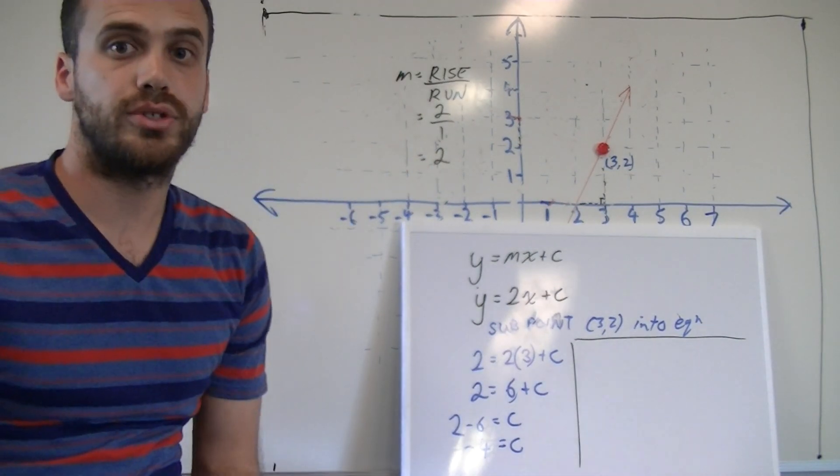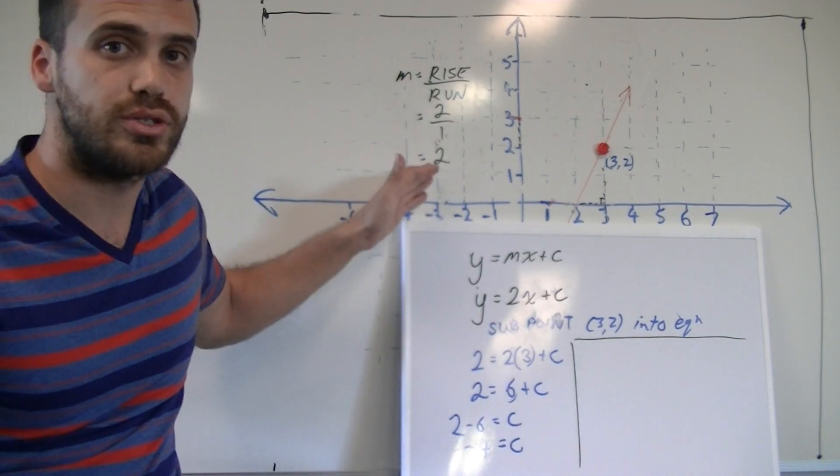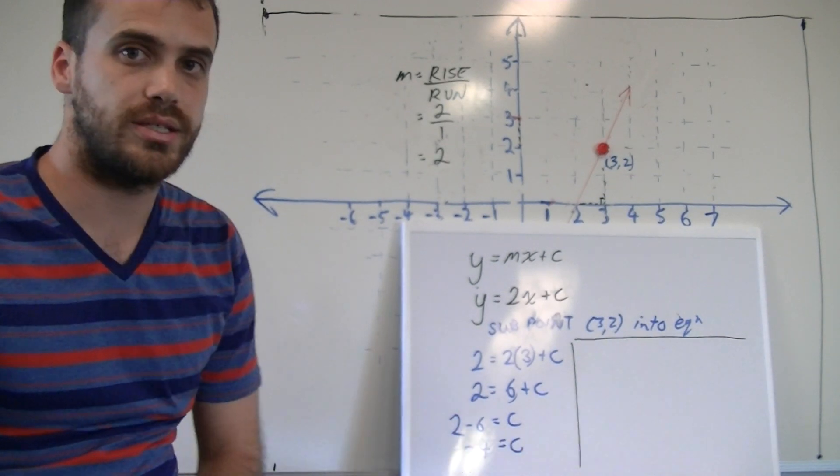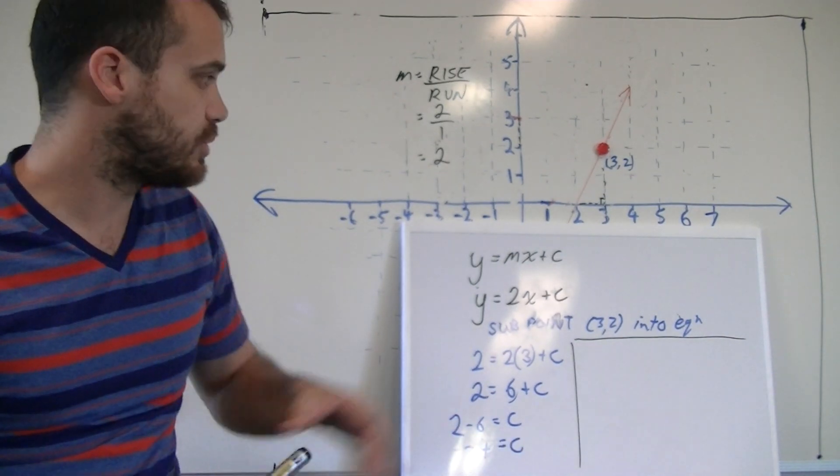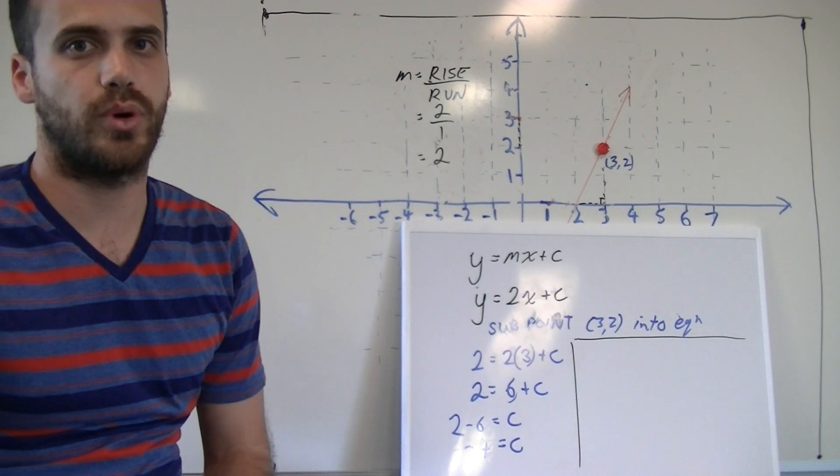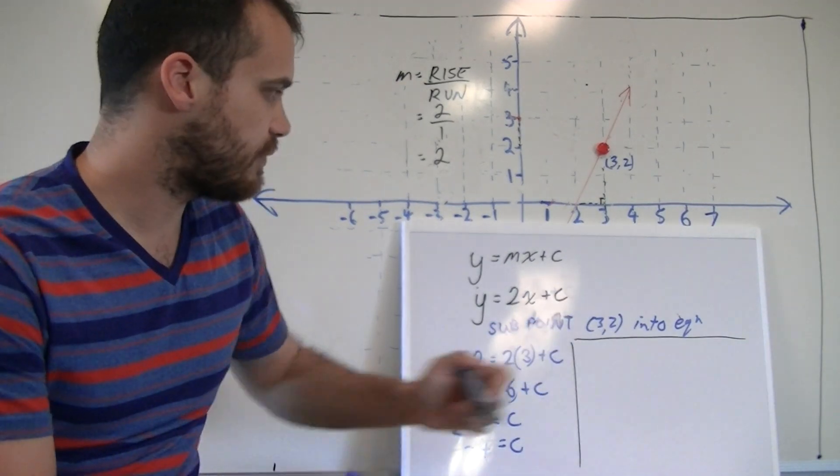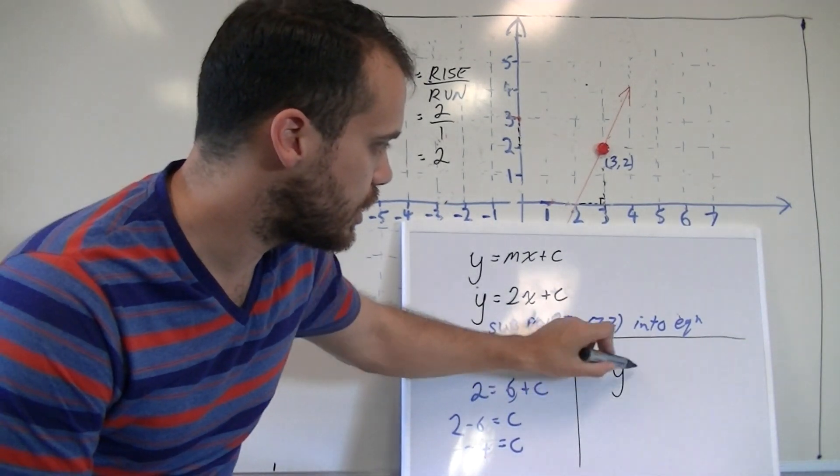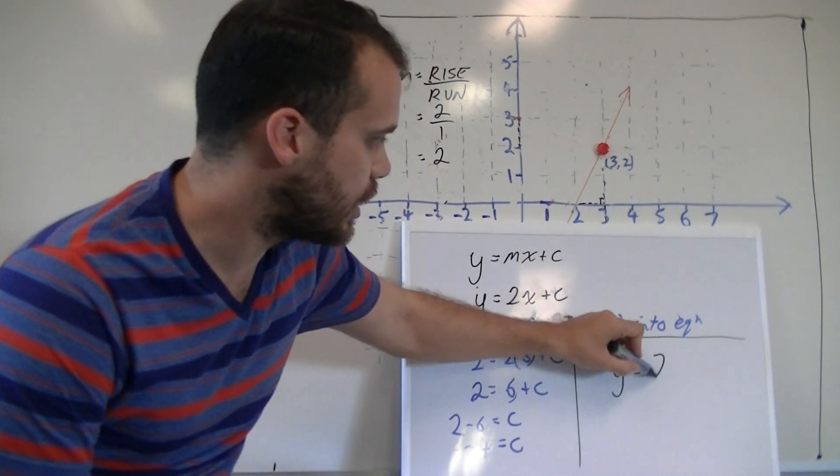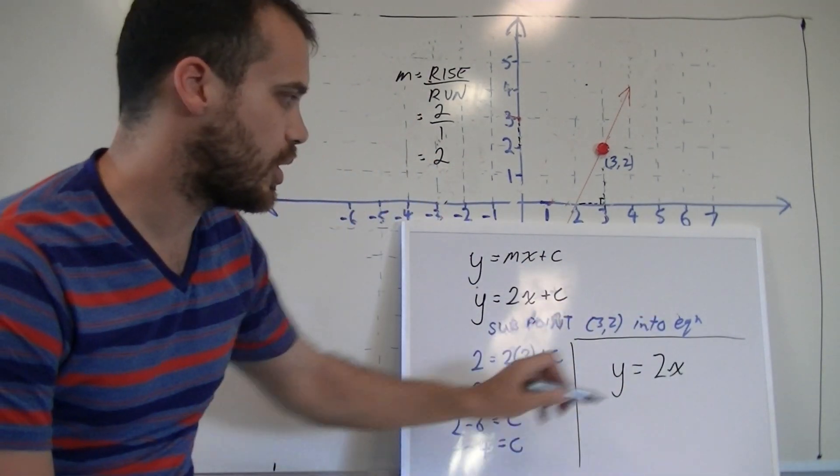So now we know two things. We know that our gradient is 2, and we know that our c value is negative 4. Our last step is really just to put it back into that equation, y equals mx plus c. So our final equation is going to be y equals 2x minus 4.